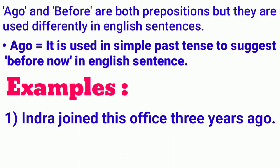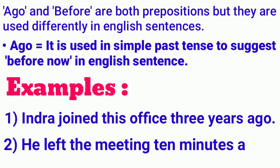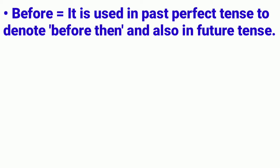Here, the preposition ago is used to denote before now — that means before this present situation. So Indra joined this office three years ago means three years before this present situation. Another example: he left the meeting ten minutes ago. Here the preposition ago denotes before now, meaning he left ten minutes before the present moment.